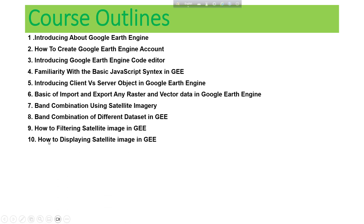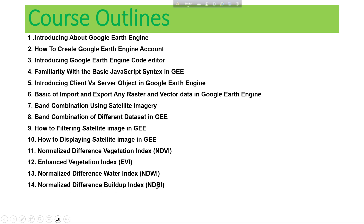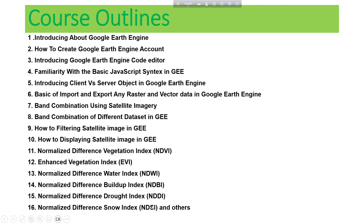We learn how to display satellite imagery in the Google Earth Engine platform and how to present your required results. We also learn Normalized Difference Vegetation Index (NDVI) — how to analyze and make analysis with NDVI using Sentinel, Landsat, or MODIS satellite imagery. Then we cover EVI (Enhanced Vegetation Index), NDWI (Normalized Difference Water Index), NDBI (Normalized Difference Built-up Index), NDTI (Normalized Difference Tillage Index), NDSI (Normalized Difference Snow Index), and other indices.